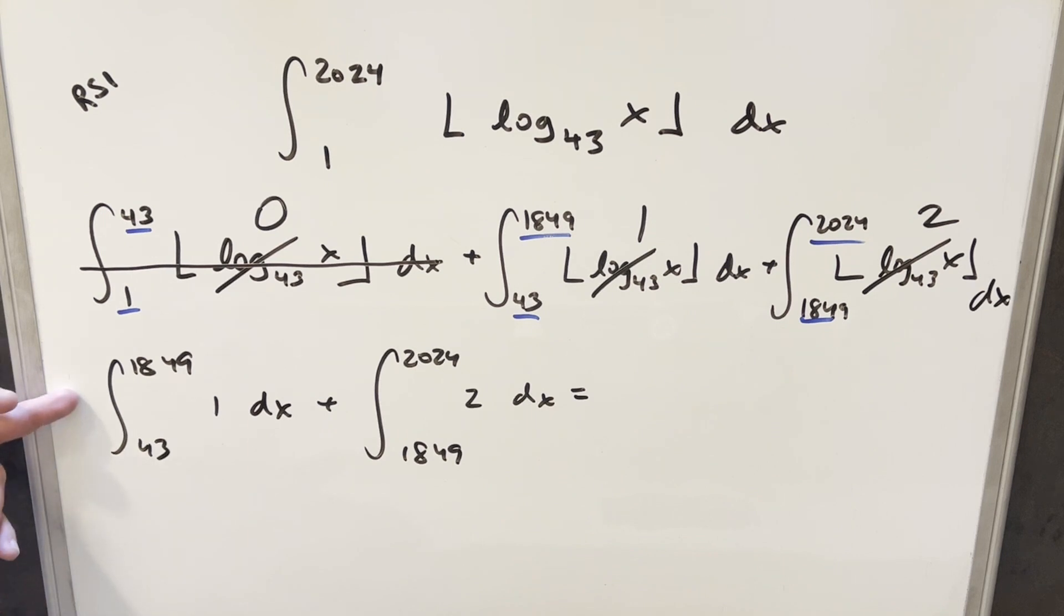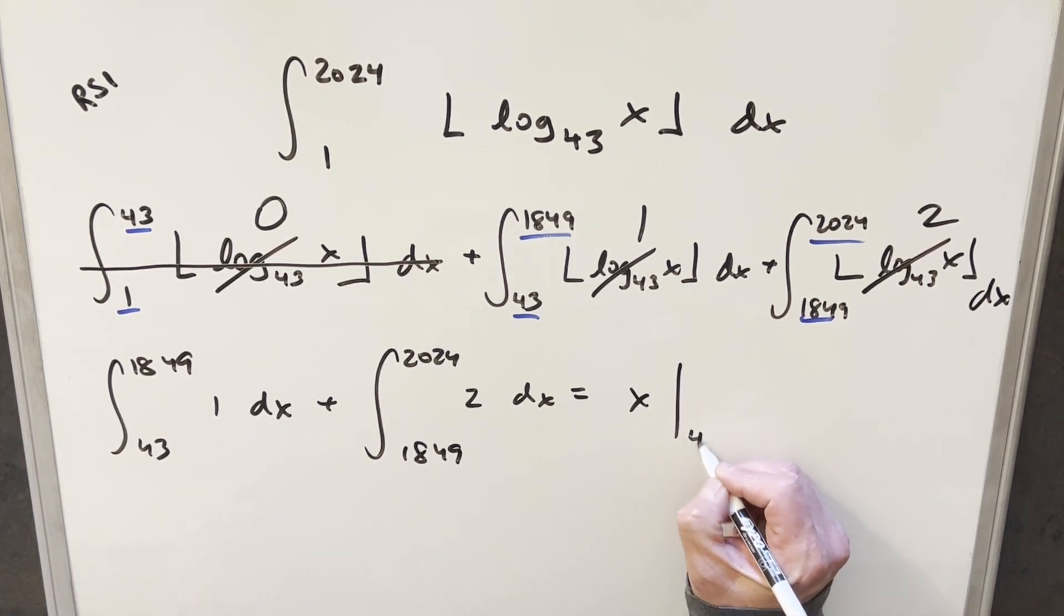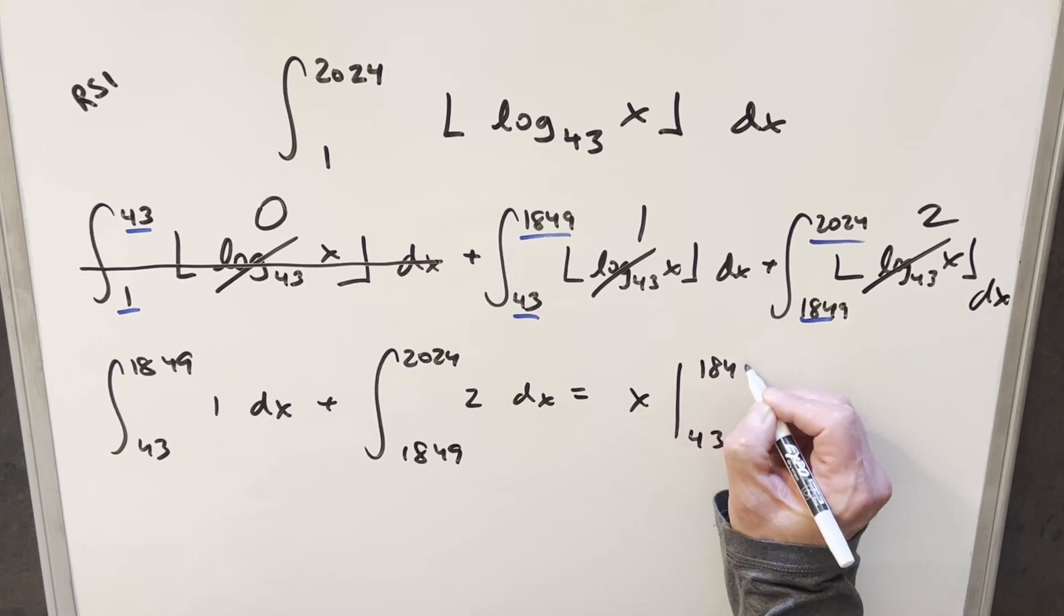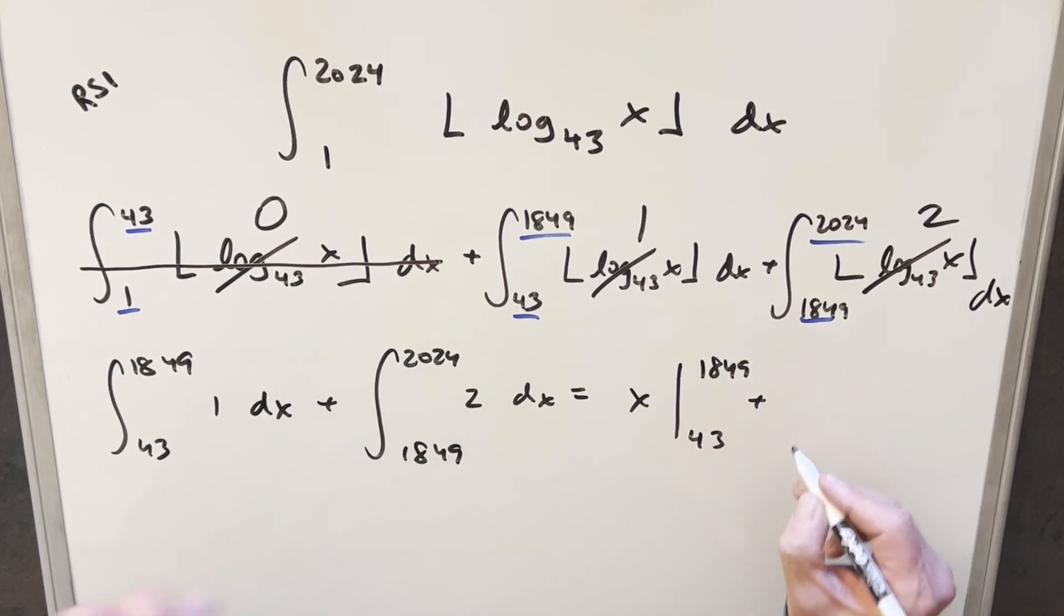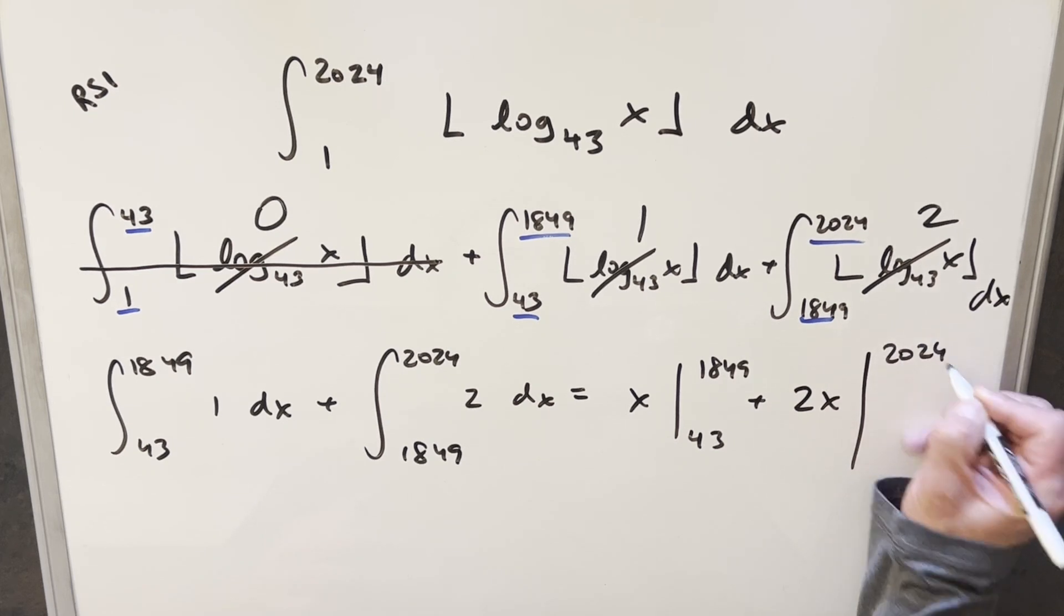And so now all we're left with is two very easy integrals. First, we just need to integrate 1. And we got x that we need to evaluate from 43 to 1849. And then here we're integrating 2. So we have 2x evaluated from 1849 to 2024.